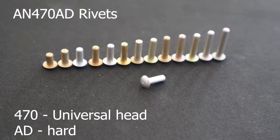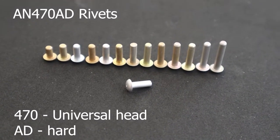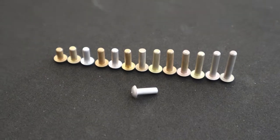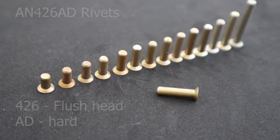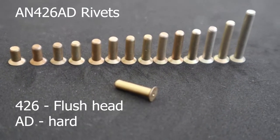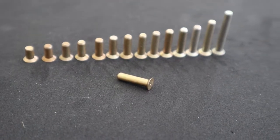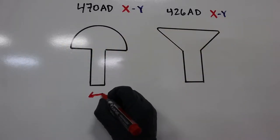So first of all when we start with rivets, we have the 470 rivets which would be a universal head, a domed head rivet, and then the AD afterwards indicates that it's hard. Same with the flush rivets, these would be 426 rivets and again you have the AD afterwards which means it's a hard rivet, so you want to make sure that for structural purposes of the aircraft they are actually hard.